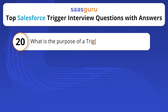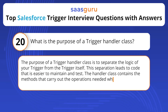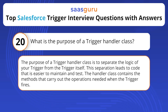What is the purpose of a trigger handler class? The purpose of a trigger handler class is to separate the logic of your trigger from the trigger itself. This separation leads to code that is easier to maintain and test. The handler class contains the methods that carry out the operations needed when the trigger fires.